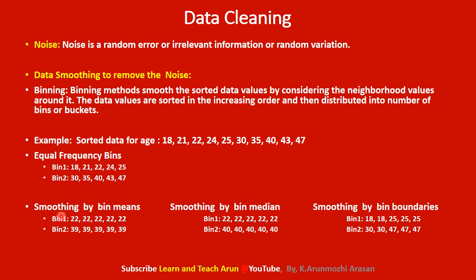We use smoothing by bin means: calculate the average mean value for each bin and replace all values in that bin with the mean. For example, if the first bin has values summing to give an average of 22, all values in that bin are replaced by 22. This is smoothing by bin means.